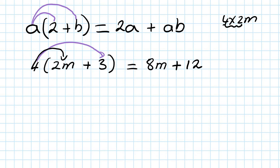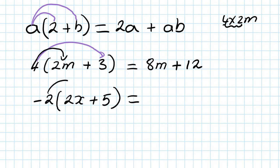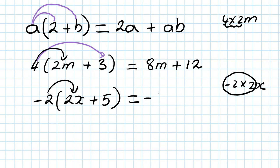Now number 3. This time it's minus, open bracket, 2x plus 5. So what we do is minus 2 times 2x. Just think about it — negative times a positive gives you a negative. So 2 times 2 is 4, so it's negative 4x. If you're not familiar with directed numbers, just use your calculator: negative 2 times 2 should give you negative 4.